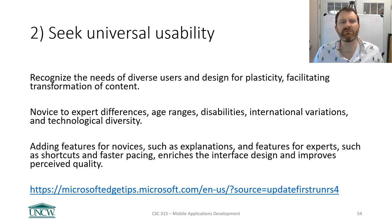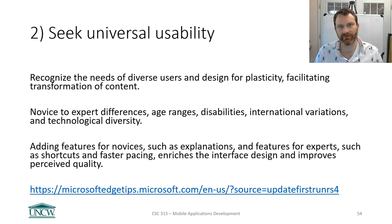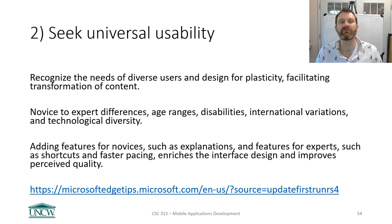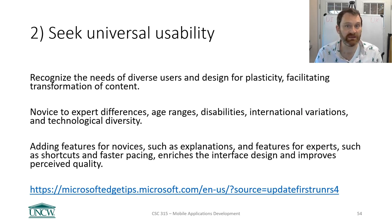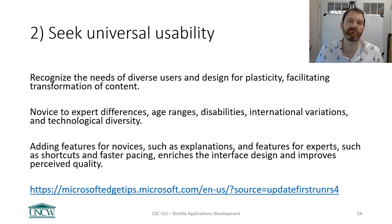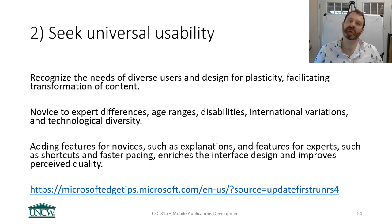Principle number two: seek universal usability. Recognize that your app is going to have diverse users. Design for plasticity — be flexible and facilitate transformation of content. In Android apps, specify sizes in SP (scale-independent pixels) and DP (density-independent pixels). Let those things grow and shrink according to the preferences of the user.